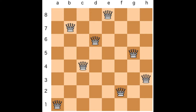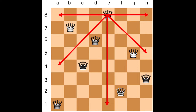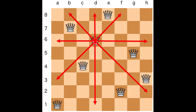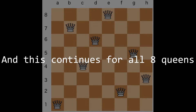Starting at the top queen, you can see it doesn't hit anything — not in the same row, not in the same column, and not along either diagonal. For the next queen on the second row, it's not hitting anything on its same row, same column, or diagonals. For the third queen, along the rows, columns, and diagonals, it's not hitting anything. This basically continues on for all eight of the queens.